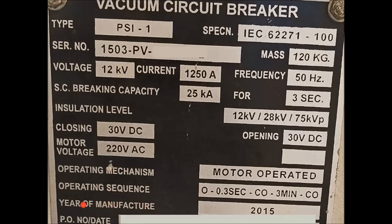The year of manufacture is mentioned as 2015, and the PO number date is also mentioned. This is all about the nameplate details of the circuit breaker.